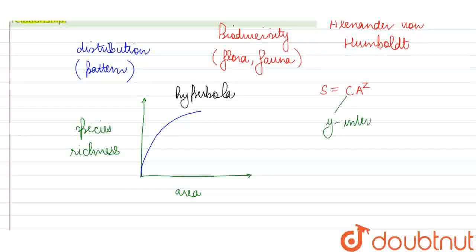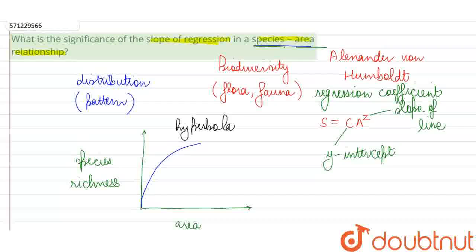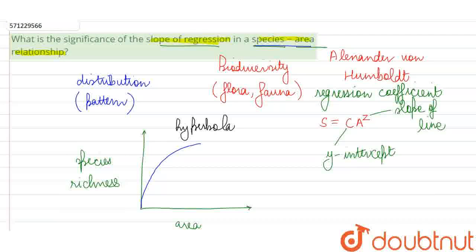C is our y-intercept in this graph. And Z is the slope of the line, which we can also call our regression coefficient. So, this is the term which we have to consider here. In the question, we are being asked about the slope of regression. That is Z, which is the slope of line or regression coefficient as we discussed it.